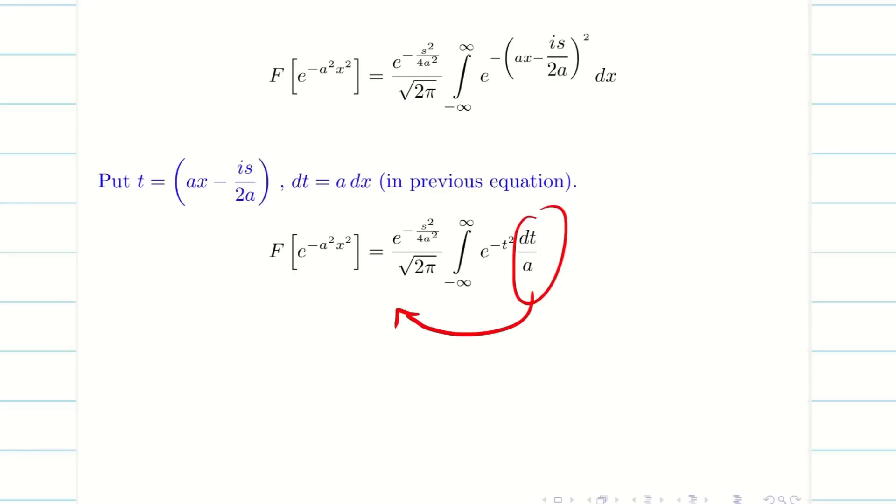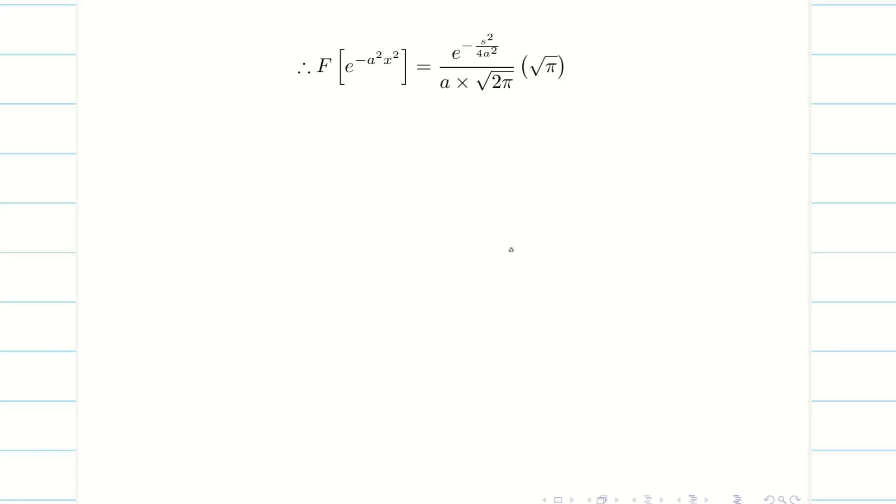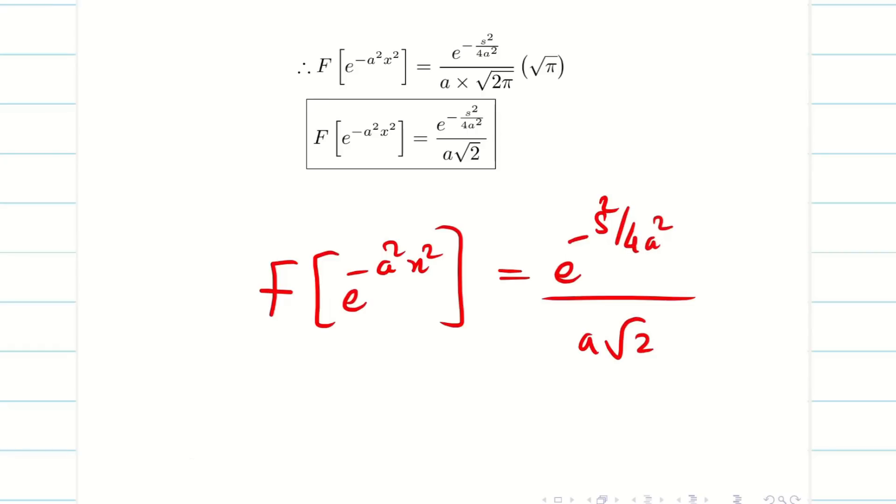So we will be getting simply minus infinity to infinity e to the minus t squared dt by a. I will push this a outside since it is a constant. I will be getting this. As I said, from the beta gamma integration we have the formula square root of pi. Now substituting this, root pi and root pi will cancel. And I am getting the answer F of e to the minus a squared x squared is e to the minus s squared by 4a squared divided by a root 2.